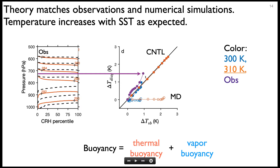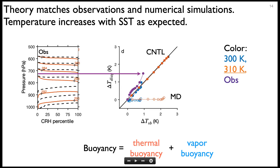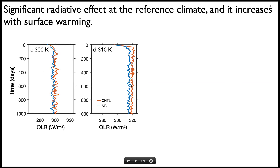We plot the derived horizontal temperature difference on the x-axis against the directly diagnosed value from observations or models on the y-axis. The solid line is the one-to-one line. Observations and control simulations all stay close to this one-to-one line, suggesting our theory matches observations and numerical models very well. The open circles for mechanism denial experiments show no horizontal temperature difference as expected. The orange color represents a warmer 310K simulation — as expected, the horizontal temperature difference increases due to more water vapor in the atmosphere.